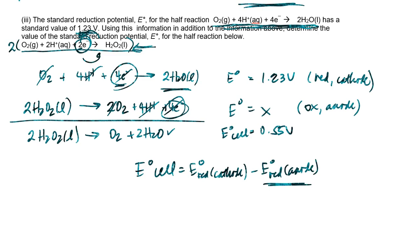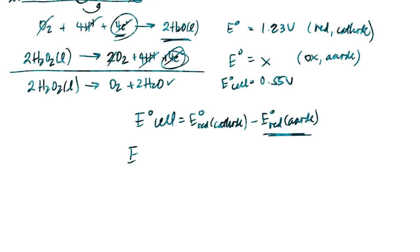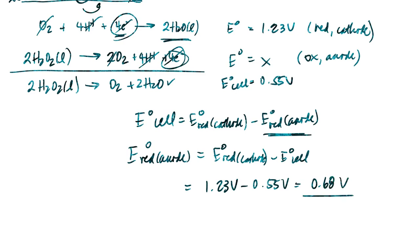Since I'm trying to solve for the anode, I'm going to go ahead and solve this equation explicitly for that particular variable. And so that's going to be our reduction potential of the cathode minus our standard cell potential. So that would be 1.23 volts minus 0.55 volts. And if you do that math, you should get 0.68 volts.